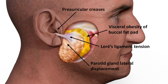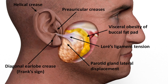Furthermore, traction at the base of the earlobe's attachment and folding of the earlobe lead to creasing. Over the years, or even decades of traction, the histopathological changes are set permanently, creating the diagonal earlobe crease, or Frank's sign.